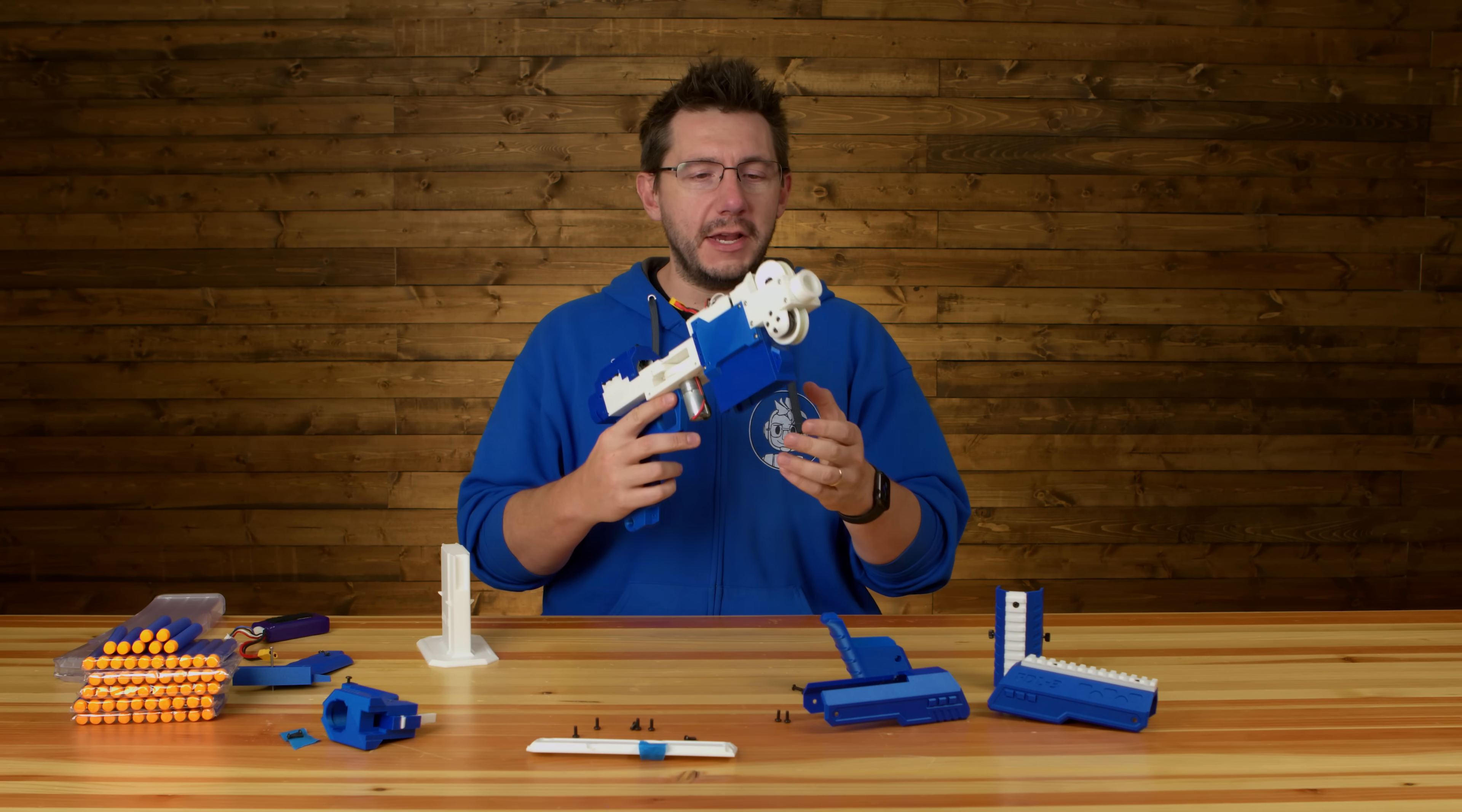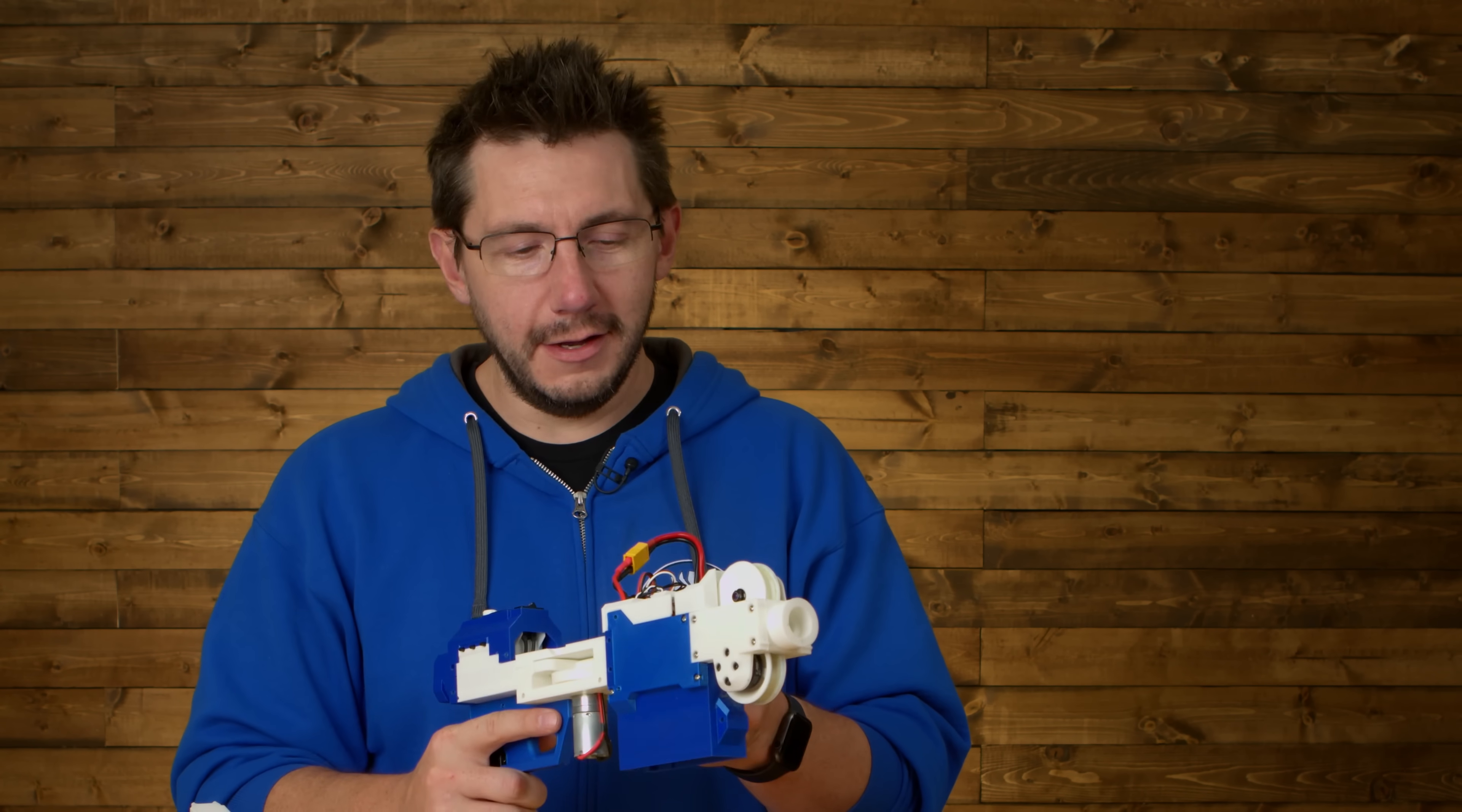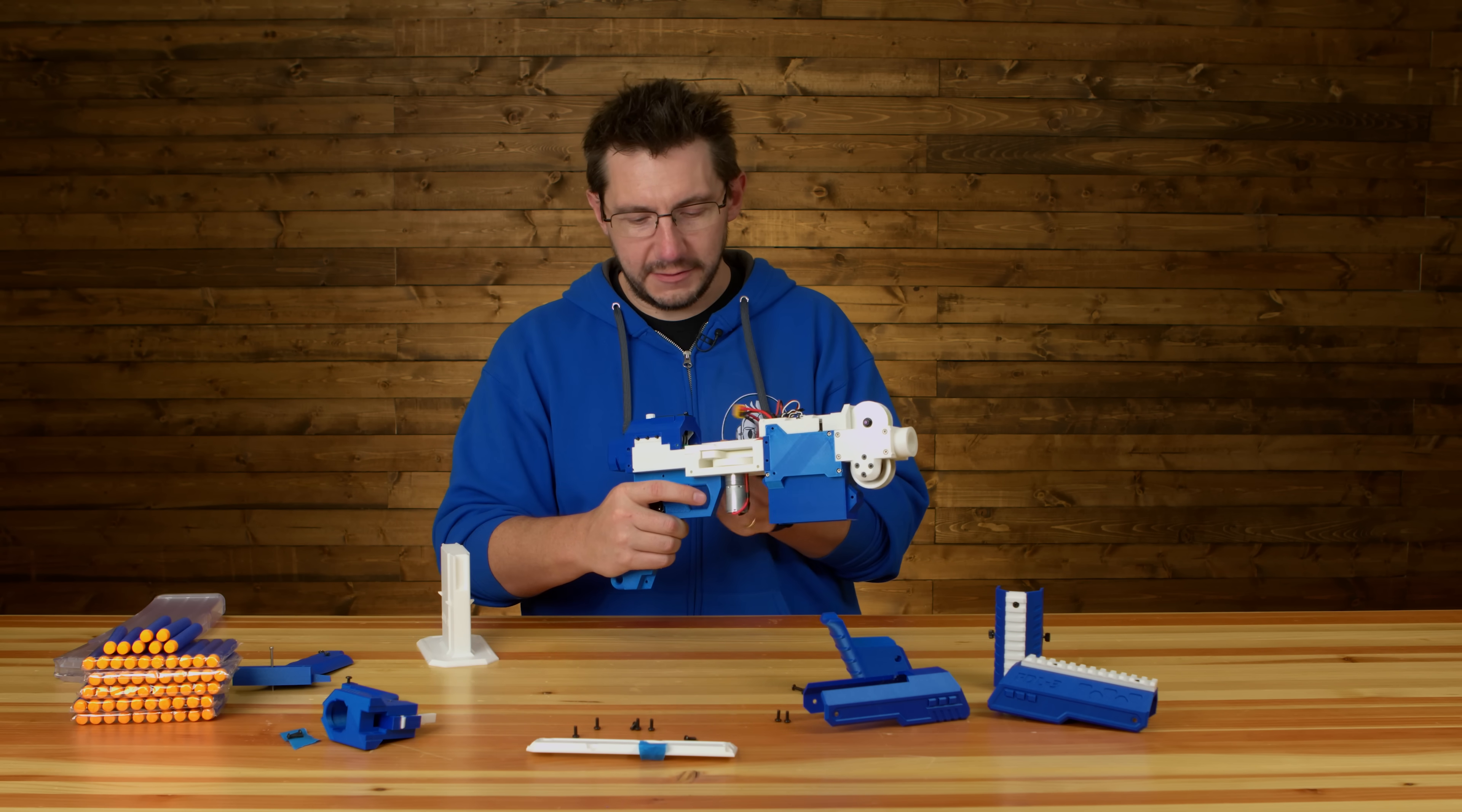So this is the Project FDL Blaster. This is amazing. This is also torn down. I tried to take as many parts off as I could while still making it functional. This is the battery. Let's plug this in and turn it on. It's the best sound in the world. So right now, according to this screen, it's set to the lowest speed and the lowest firing speed and the lowest firing rate.